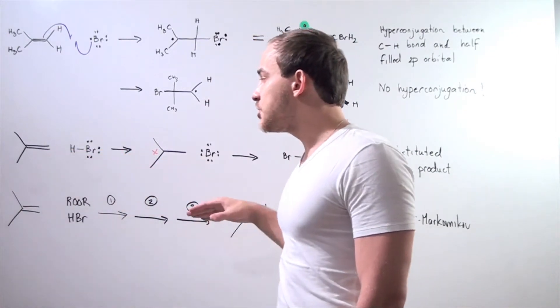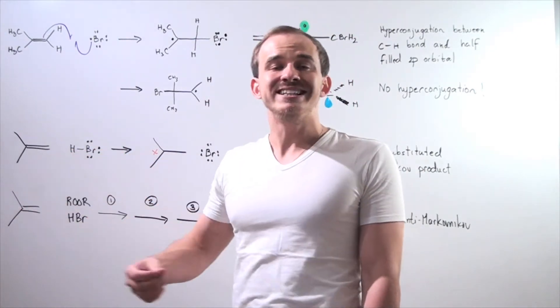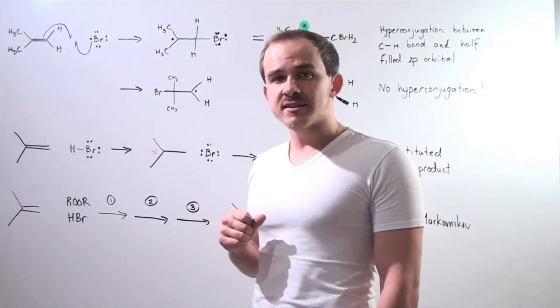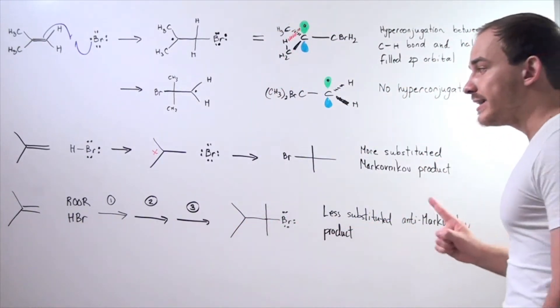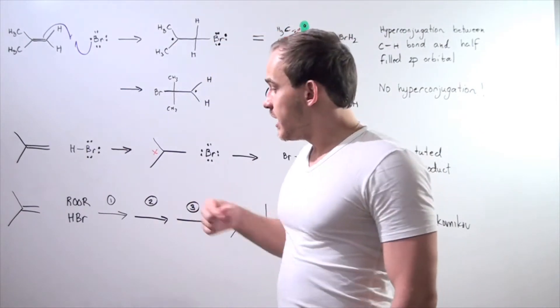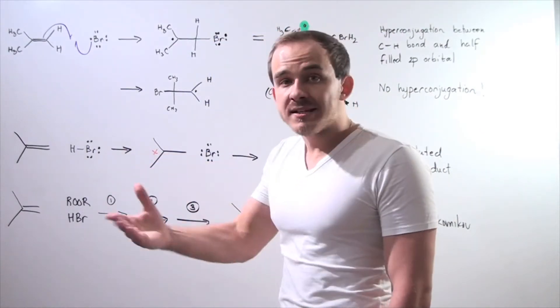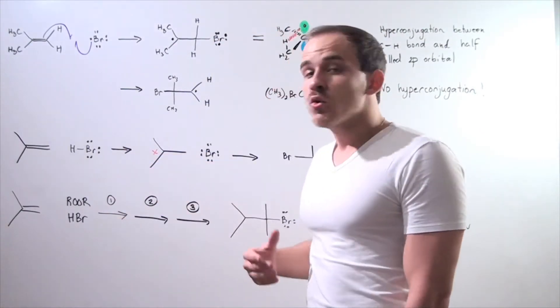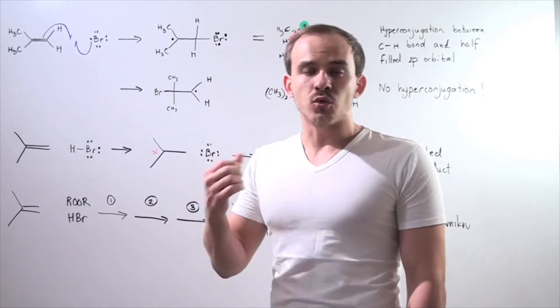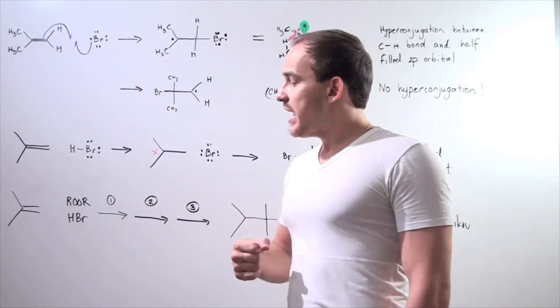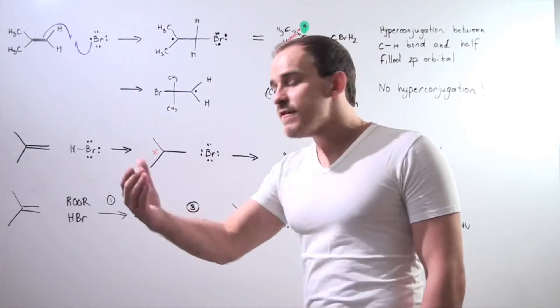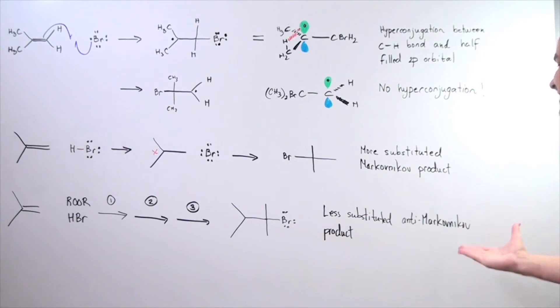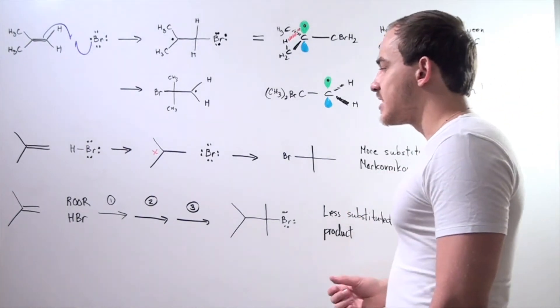So in the simple addition of our HBr molecule in the absence of peroxide, we form the Markovnikov product. But if we add a little bit of peroxide and mix it with HBr, we have our radical addition reaction take place. We have initiation step, propagation, and termination, and we form the less substituted anti-Markovnikov product. Why is this the case?